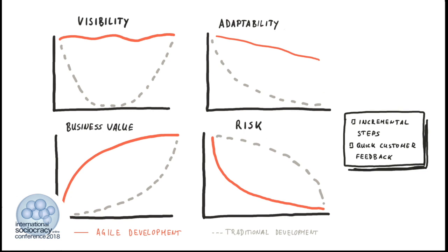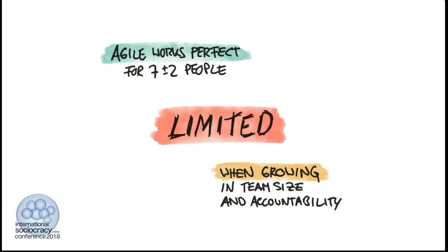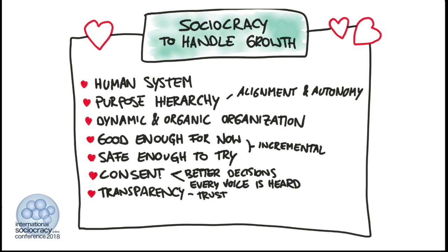That is why we love agile and we use it so much. However, agile works perfectly only for teams with about seven plus or minus two people. If you grow bigger, you have limited approaches in agile that can handle the upcoming problems. As I said, they are limited. We are a team that grew in size as well as in accountability. Before, we were part of a whole, and now we are accountable for the whole. So there are certain problems that cannot or are hard to address with agile approaches, and we looked for new systems — one of them was sociocracy.